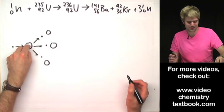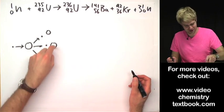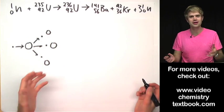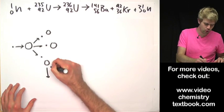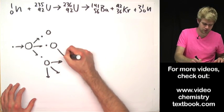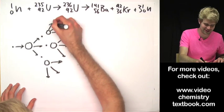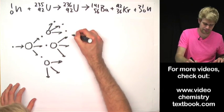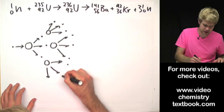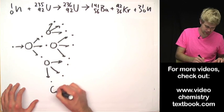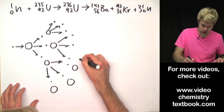So now this one uranium atom created three neutrons that can split three new atoms. Each one of these makes three neutrons. Here are the arrows for the neutrons coming out.